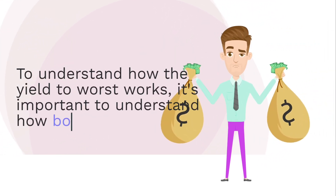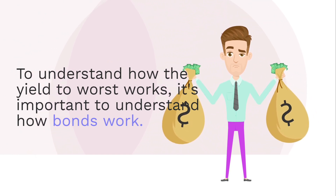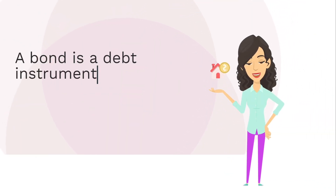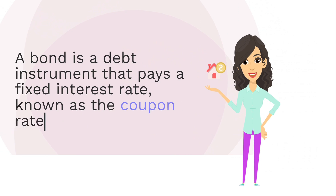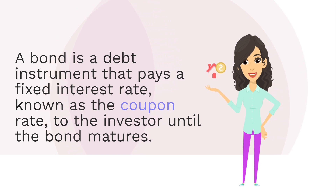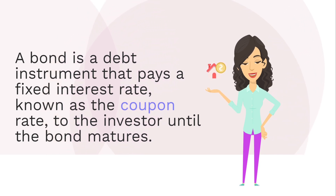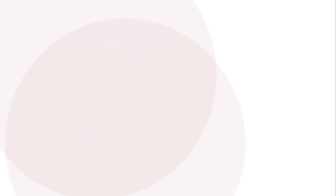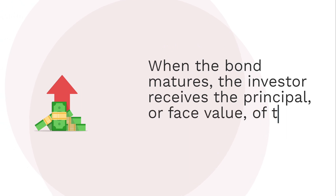To understand how the yield to worst works, it's important to understand how bonds work. A bond is a debt instrument that pays a fixed interest rate, known as the coupon rate, to the investor until the bond matures. When the bond matures, the investor receives the principal, or face value, of the bond.